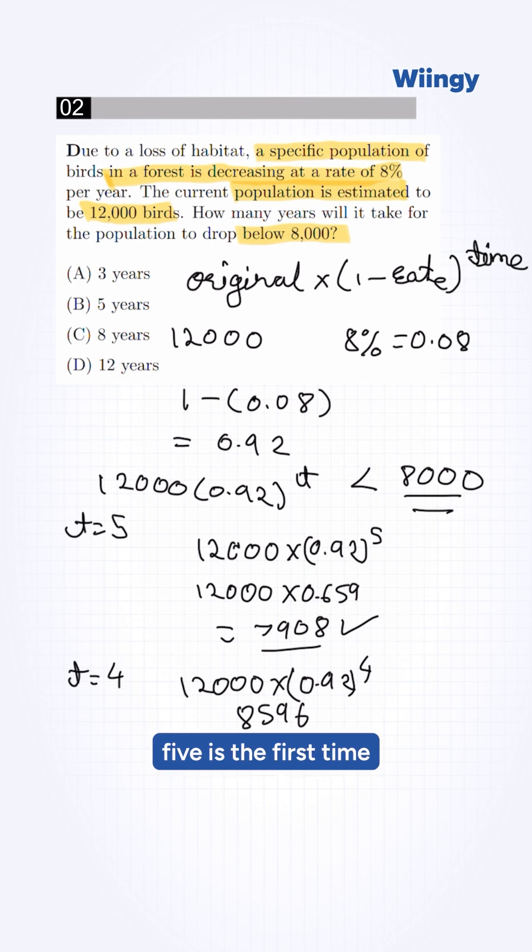Verifying this, therefore, year 5 is the first time it drops below. The correct option is B. For more SAT problems solved, subscribe now.